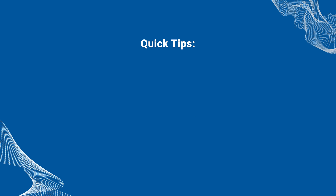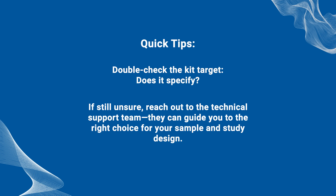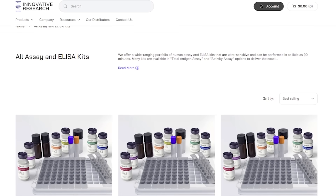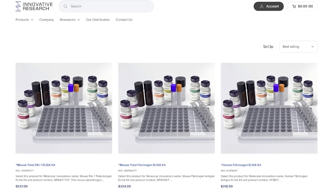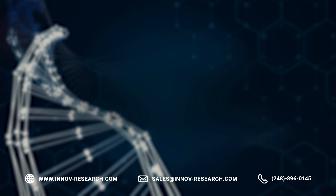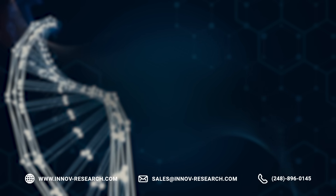Here are some quick tips. Double check the kit target — does it specify? If still unsure, reach out to the technical support team; they can guide you to the right choice for your sample and study design. Do you want more help picking the best ELISA kit for your research? Contact the Innovative Research team or explore our full selection online. We're here to help you find the right tools for your next breakthrough. Thanks for watching. Subscribe to our channel for more science tips and tutorials from Innovative Research.